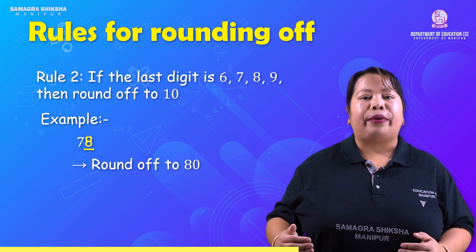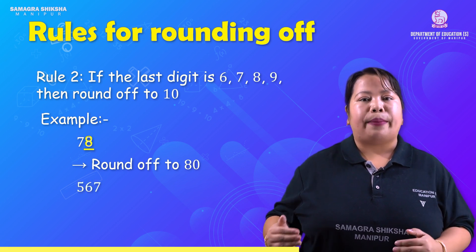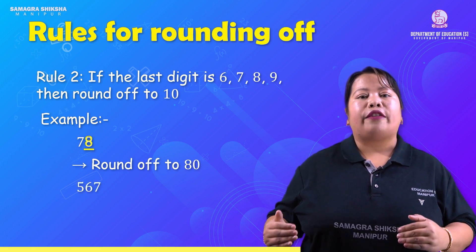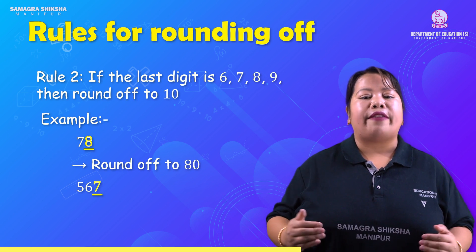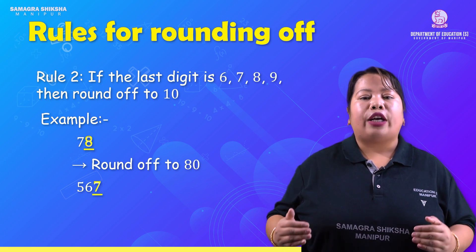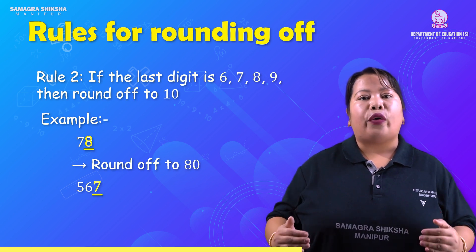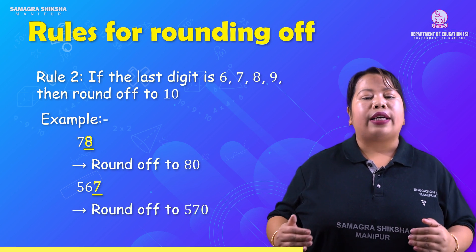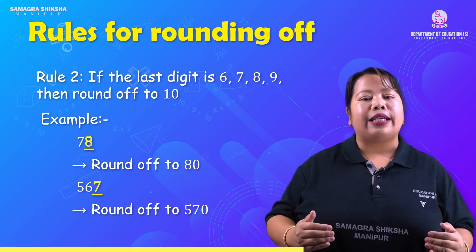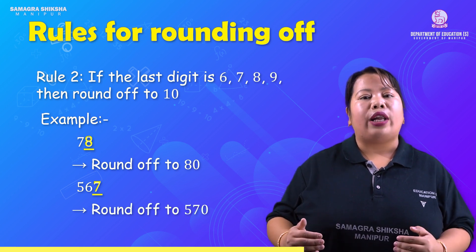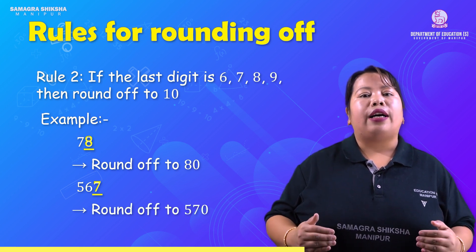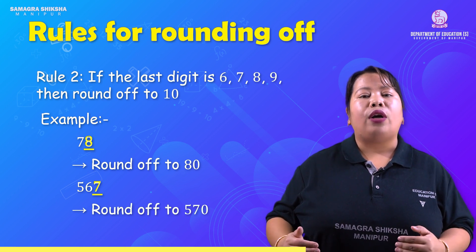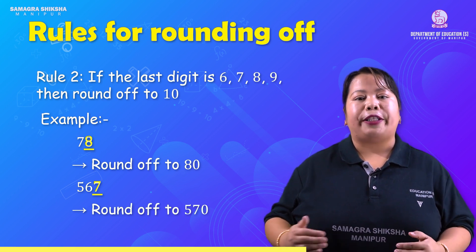Another example: 567. The last digit from the right side is 7. Since 7 follows Rule 2, it is rounded up by 10. That means 567 is rounded off to 570.